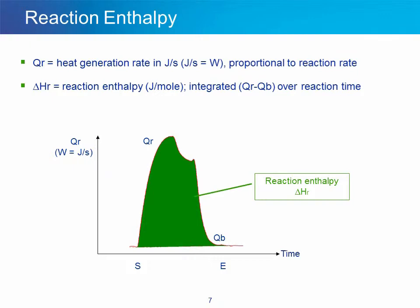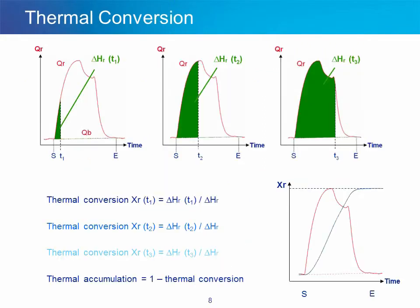Now, if you look at a real heat flow profile like this one, you see time on the x-axis and reaction heat flow, or QR, on the y-axis. QR is actually expressed in watts, which is joule per second. The way you obtain the reaction enthalpy is by looking at the integral of QR over the entire course of the reaction. This gives delta HR, or reaction enthalpy. The software does an iterative integration of the heat flow signal against time, which allows to obtain the thermal conversion profile. This is extremely useful with the Multimax because you can get a preliminary idea of process safety with thermal accumulation data in up to four reactors at the same time.